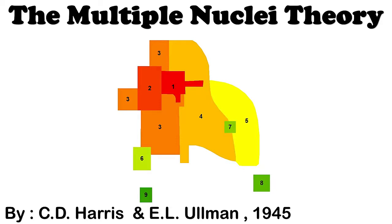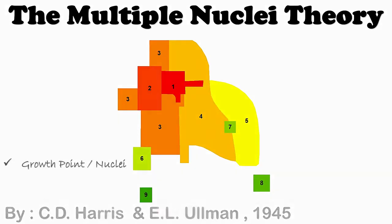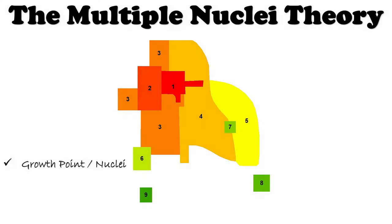This theory was named the Multiple Nuclei Theory. It proceeds with certain assumptions: that in many cities the land use pattern is built up around several growth points or nuclei. In some cities these nuclei have existed since the city was founded, while others develop as the city grows. The city has a cellular structure, the pattern of which will be largely determined by the unique factors of the site and history of any particular city.